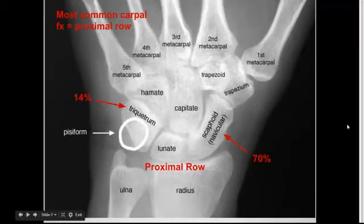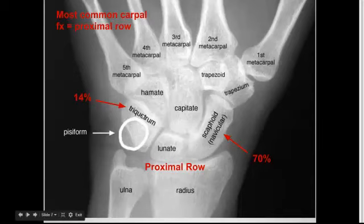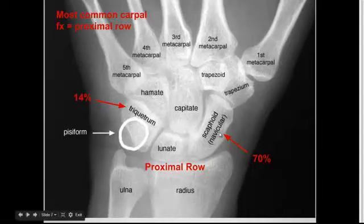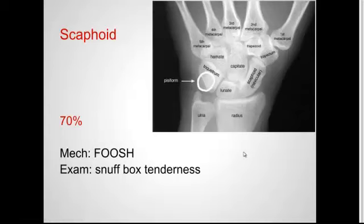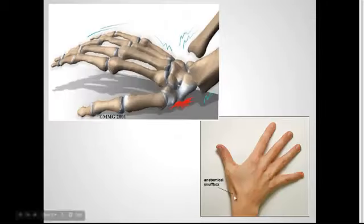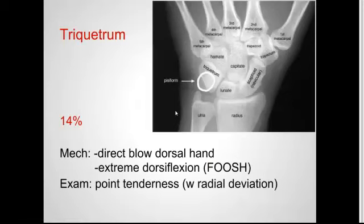Now let's talk a little about fractures of the carpal bones. The most common fractures are going to be in your proximal row — scaphoid, lunate, triquetrum, and pisiform. Of that proximal row, the scaphoid and the triquetral bone — which is our patient's fracture — are going to be your most common. Scaphoid is by far the most common at 70%; that's your FOOSH injuries associated with snuffbox tenderness. The triquetral bone, which I really hadn't been aware of, is the second most common, quoted at 14% — which makes sense; it's our patient's fracture.